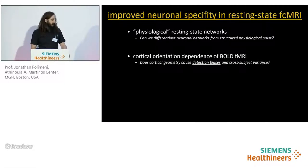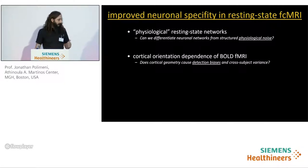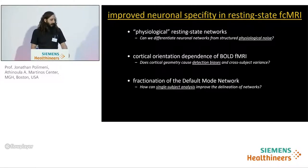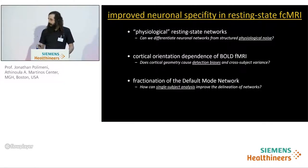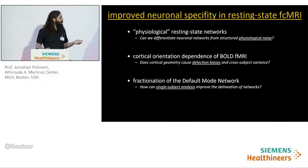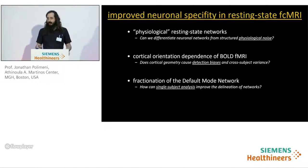Next, I'd like to show some recent data looking at cortical orientation dependence in BOLD fMRI, and ask the question: does cortical geometry impart detection biases across subject areas? And I'll end by showing recent work using a collaboration from Randy Buckner's group looking at the fractionation of the default mode network, as well as other well-known global functional networks, asking how single-subject analyses can help improve the delineation of these networks.